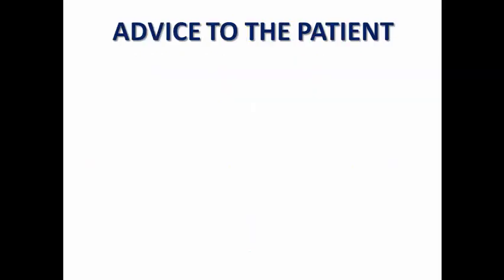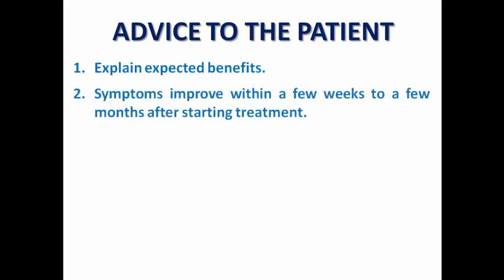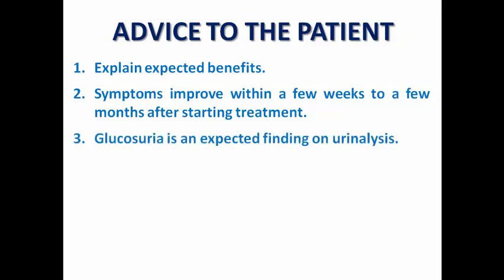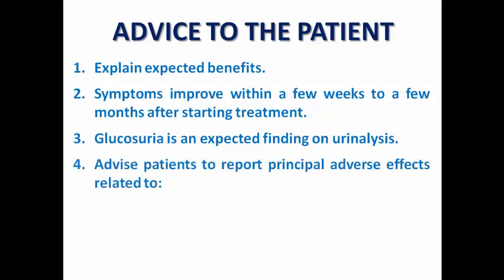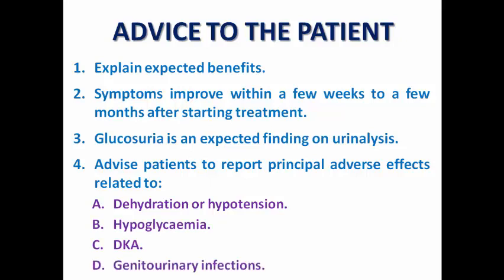Regarding patient advice: explain the expected benefits and inform them that symptoms may take a few weeks to months to improve. Reassure the patient that glucosuria is expected on urine analysis — some diabetic patients may interpret it as poor diabetes control, and non-diabetic patients may worry they are developing diabetes. Glucosuria is an expected finding with SGLT2 inhibitors as part of their mechanism of action. Advise the patient to report any adverse effects such as dehydration, hypotension, hypoglycemia, diabetic ketoacidosis, or genitourinary infections, and educate them about symptoms of these complications for early reporting.